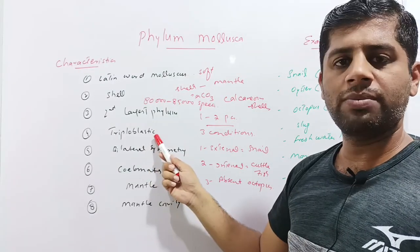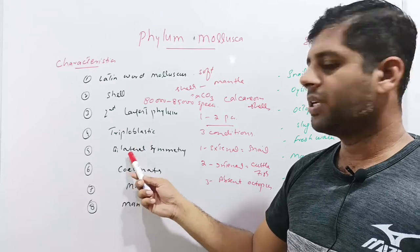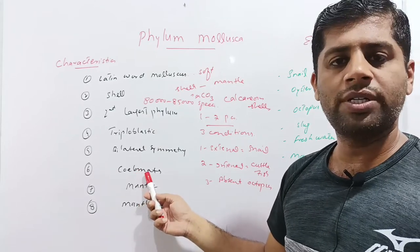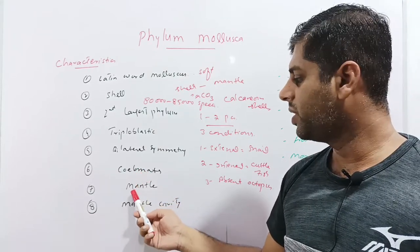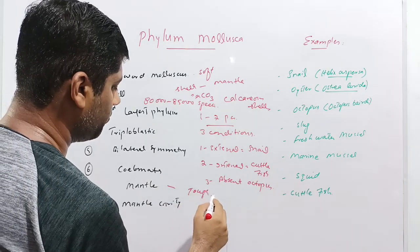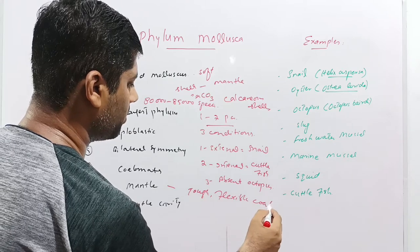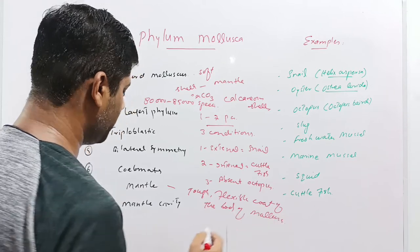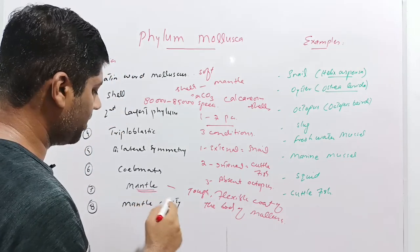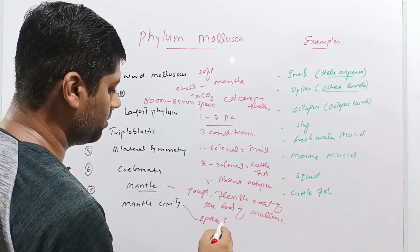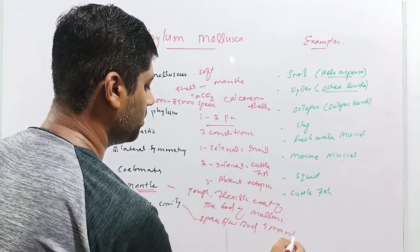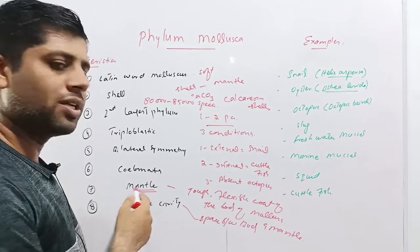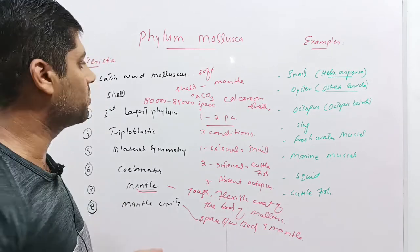Final characteristics of the phylum: these are triploblastic animals in which the body is composed of three layers. These are bilaterally symmetrical, meaning their body can be divided into two equal halves by an imaginary line. These are also coelomates having free body cavity or empty body space in them. Then is the mantle. The mantle is the tough, flexible coat of the body of molluscs. In case of molluscs, their bodies are covered with a thick coat called mantle and the space between this mantle and body is called mantle cavity. Most of the organs like respiratory organs, excretory organs, and reproductive organs open in the mantle cavity. The mantle also secretes the calcareous shell in molluscs.